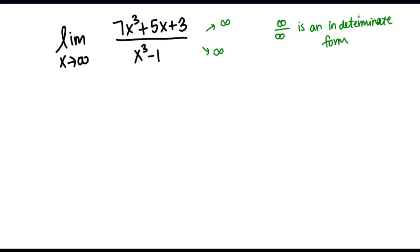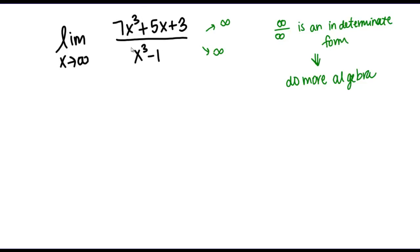What indeterminate form means essentially is that I don't know what the answer to this limit is just by knowing that the form is infinity over infinity — I need to do a little bit more work. When you get these indeterminate forms like infinity over infinity, you're going to need to do more algebra of some sort, and somehow rewrite this expression so that we can try to take the limit in a different way.